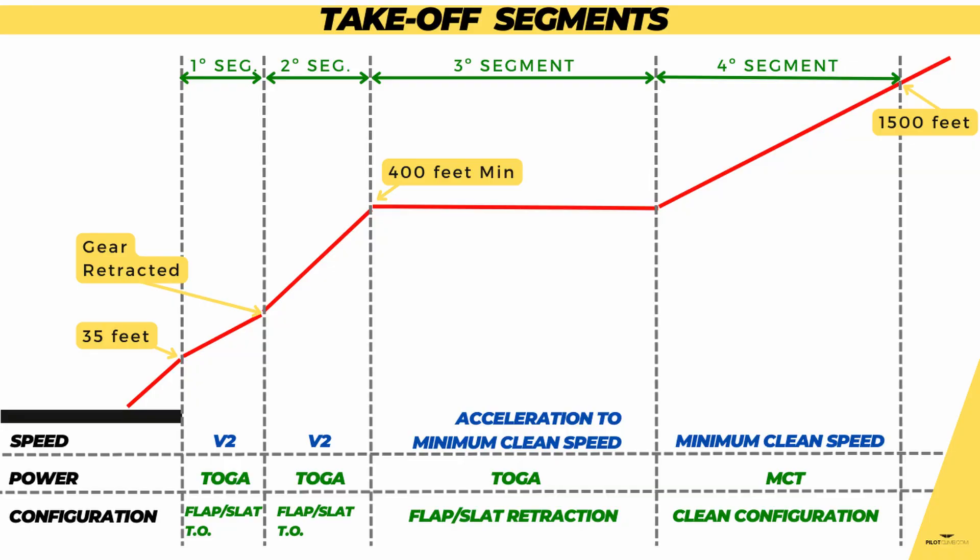The second take-off segment starts from the end of the first take-off segment, when the gear was retracted, all the way up to a minimum height of 400 feet. The thrust during the second take-off segment is still take-off power — either TOGA, assumed temperature, or flex. The speed at which you fly the second take-off segment, climbing from gear retraction up to 400 feet, is V2. The minimum climb gradient required for a twin-engine aircraft during the second take-off segment is 2.4%, which your aircraft needs to achieve in a single-engine condition. The configuration is gear up, with take-off flaps still set.